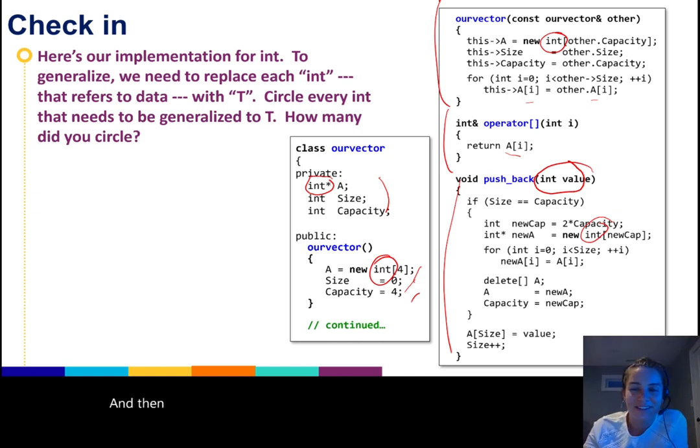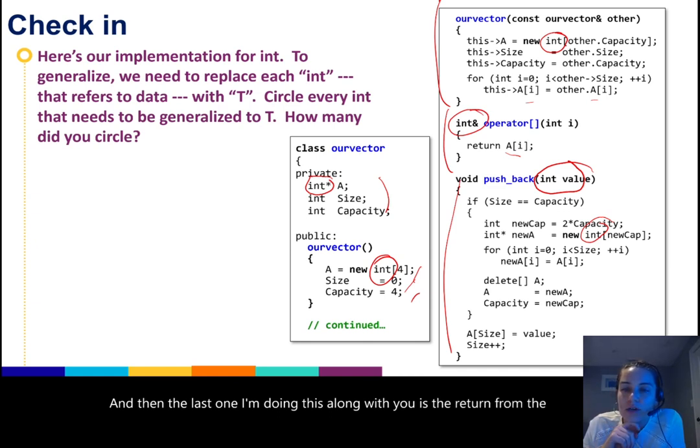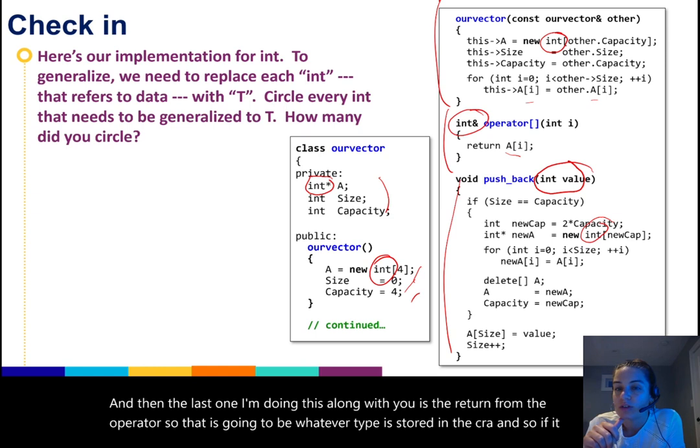So here in pushback, this value is typed to an integer value, but if we were trying to make it general, the pushback parameter would need to be general. Then the last one I'm doing this along with you is the return from the operator. That is going to be whatever type is stored in the C array, and so if it is generalized, that would need to also be generalized.